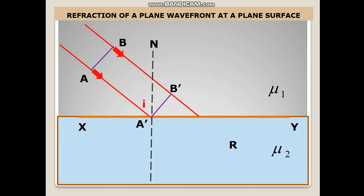A dash B dash is again the incident wavefront. Now by the time the ray has reached C, A dash already starts emitting a wavelet. We will take B dash C, but the radius when it enters the medium becomes less. Therefore, the radius chosen is less than B dash C.